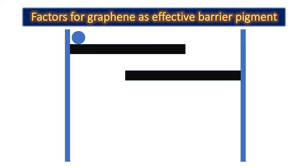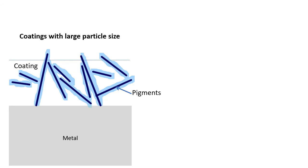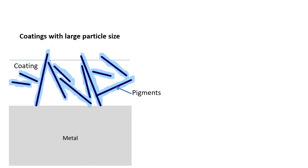To make graphene an effective barrier pigment, a few things seem to be critical. First is particle size — particle size affects the orientation and arrangement of the planar pigments, which is very important to the barrier effect as we saw in the demonstration. A very high particle size may introduce defects into the coating.